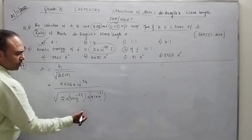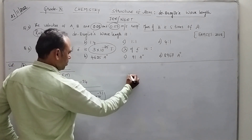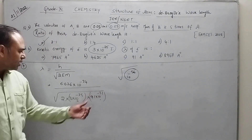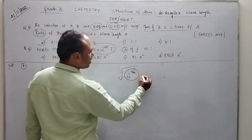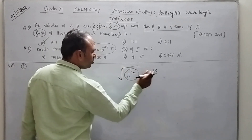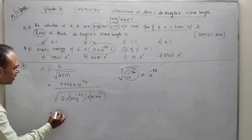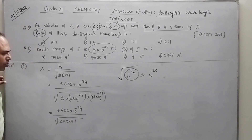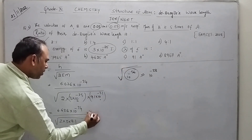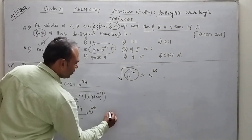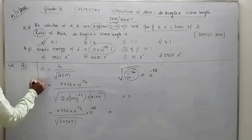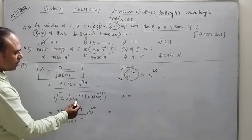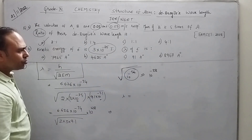Let us solve. 10 to the power of minus 25 and 31 — so we get 10 to the power of minus 56, then root of this. Always remember, if you have a root, take an even number. So root of 10 to the power of minus 56 will be minus 28. Now: 6.626 into 10 to the power of minus 34 by root of 2 into 3 into 9.1, and minus 28 becomes plus 28 in the numerator. So 34 minus 28, we get 10 to the power of minus 6. Lambda is 0.8967 into 10 to the power of minus 6 meters.